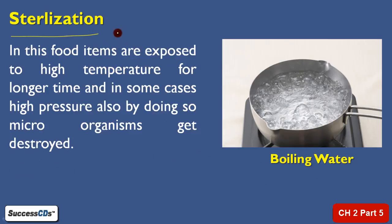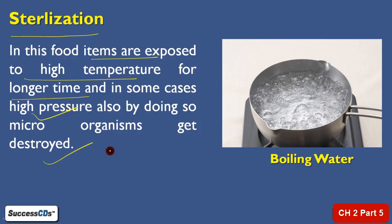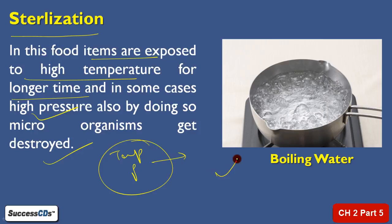Sterilization also uses high temperature. In sterilization, food items are exposed to high temperatures for a longer time, and in some cases high pressure is also applied. In both conditions, micro-organisms get destroyed because micro-organisms need an optimum range of temperature and pressure to survive. If that range is not maintained, they will die. For example, if you boil water at high temperature, micro-organisms cannot withstand it and get destroyed, making the water free from micro-organisms.